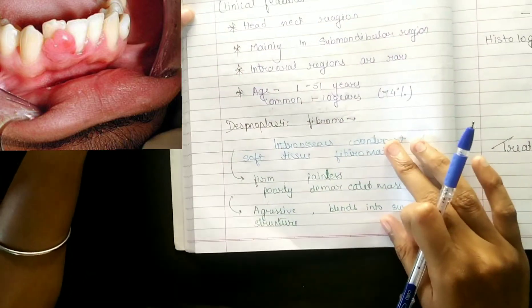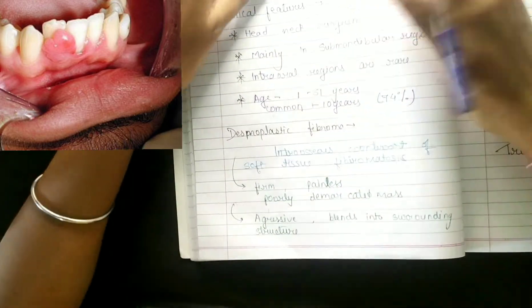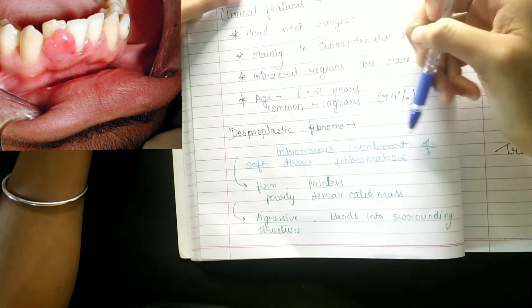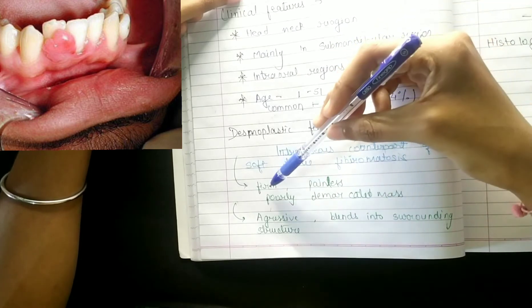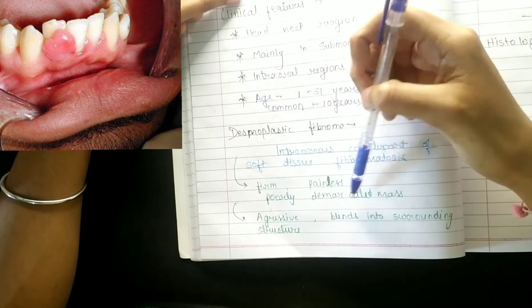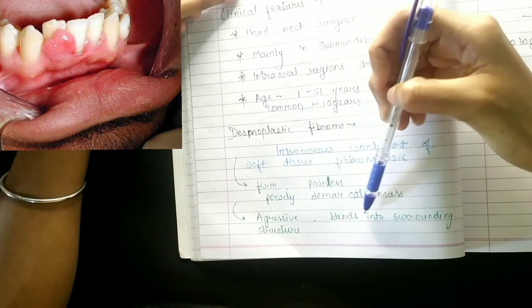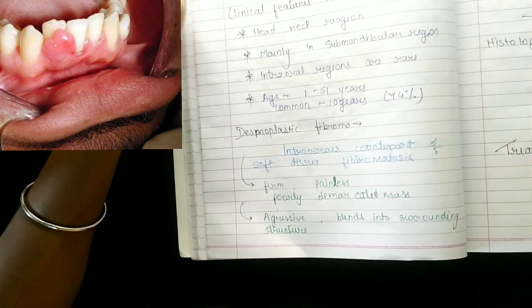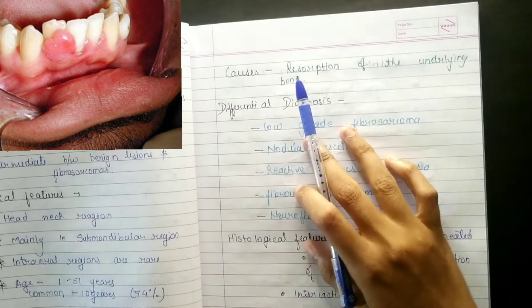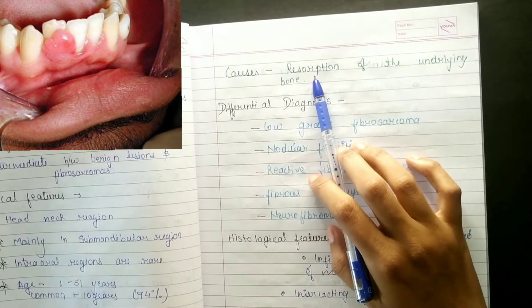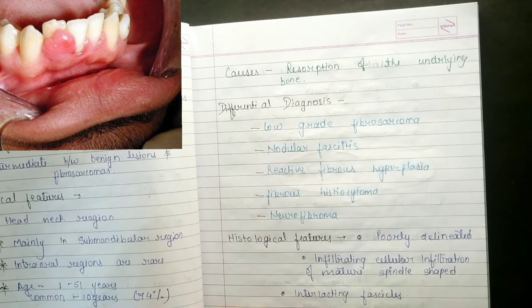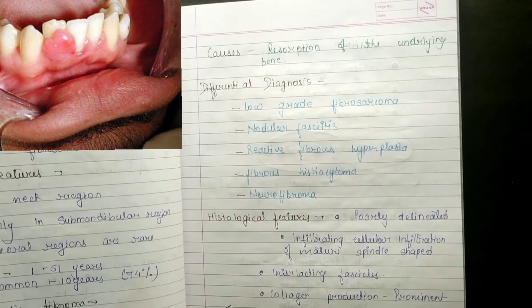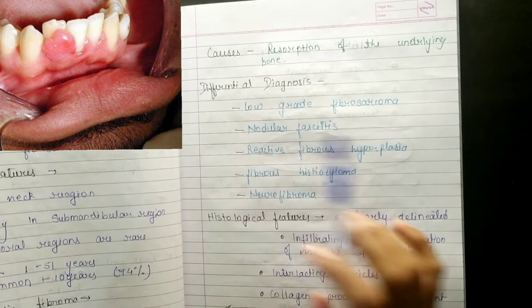Here we have desmoplastic fibroma, so it is an intraosseous counterpart of soft tissue fibromatosis. It is painless, poorly demarcated mass. It is aggressive, blends into surrounding structure. It is due to resorption of the underlying bone.